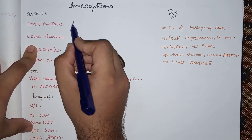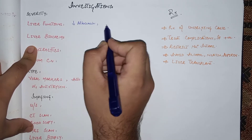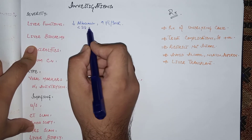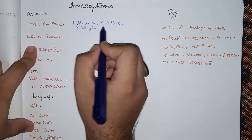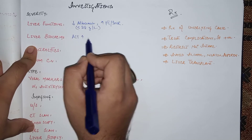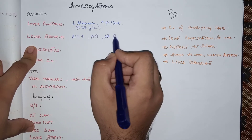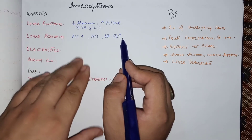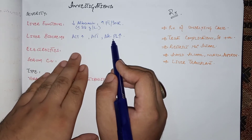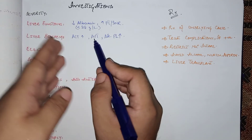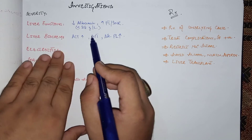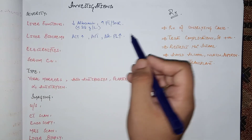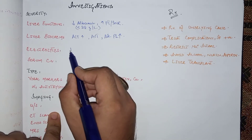For investigations of cirrhosis, liver function tests are key. Reduced albumin and increased PT/INR indicate a worse prognosis; albumin below 28 g/L indicates very poor prognosis. In liver biochemistry, ALT, AST, and alkaline phosphatase are initially elevated, but as the disease progresses and hepatocytes are replaced by fibrotic tissue, these enzymes may fall to normal or below-normal levels due to loss of functioning hepatocytes.